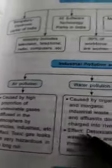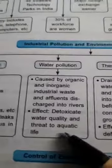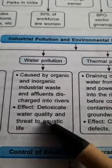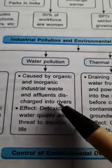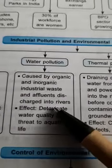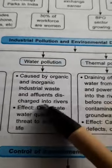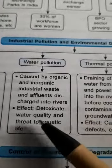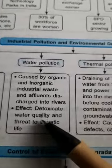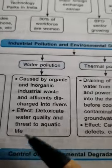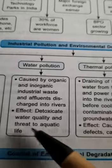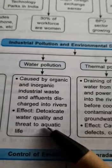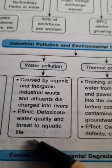Water pollution is a major part of industrial waste. Effluents are discharged into rivers, and that is why our water quality is degraded. Our aquatic life faces the biggest threat from this industrial waste and effluents.